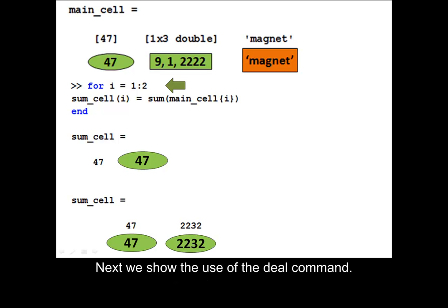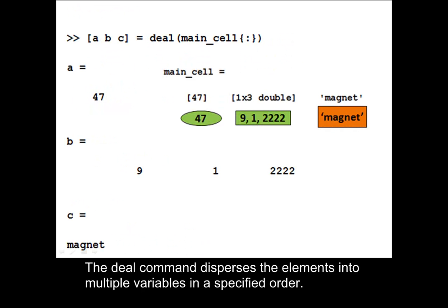Next we show the use of the deal command. The deal command disperses the elements into multiple variables in a specified order.